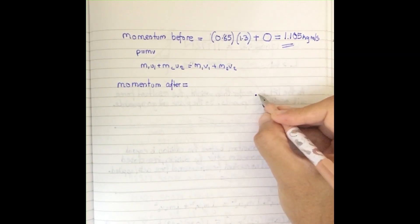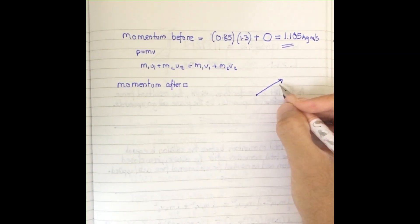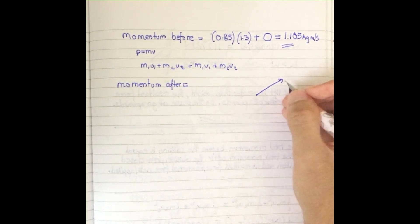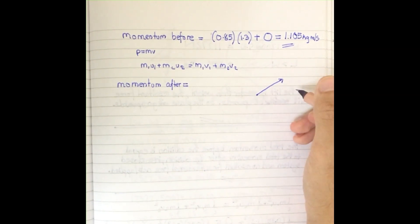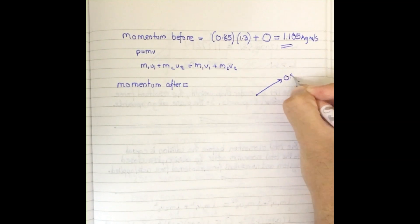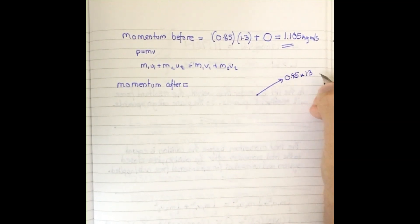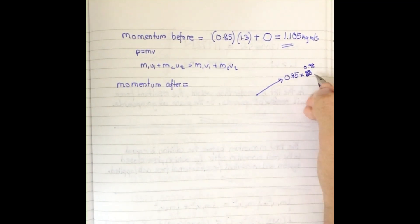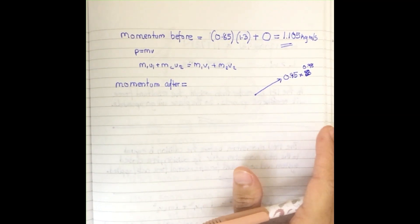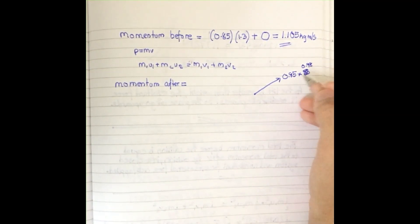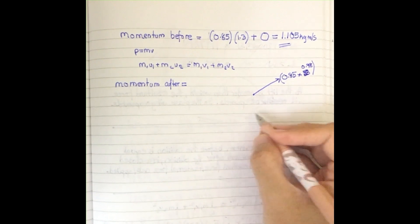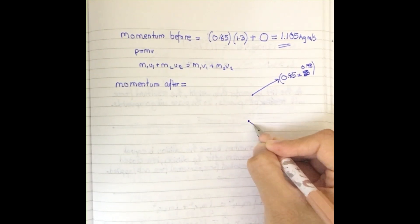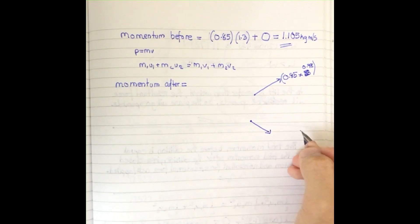Ball A is going in one direction with its final momentum vector. I'll represent that as 0.85 times 0.98 — 0.98 is the final velocity of A. We're only considering final values here. This gives us the momentum magnitude for A going in that direction.